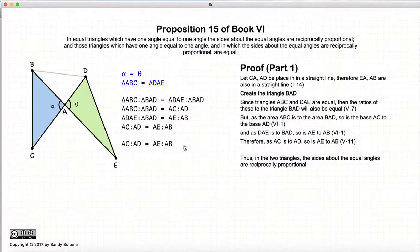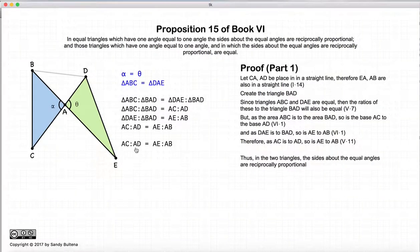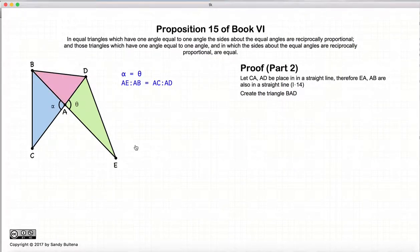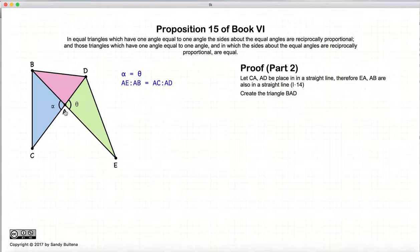Thus we have shown that if the angles are equal and the areas are equal, then the ratios of the sides are reciprocally proportional. Part two of this proof is very similar but it's just the inverse — we're basically saying again the two angles are equal, and if the lengths of the sides are reciprocally proportional then the areas are equal.